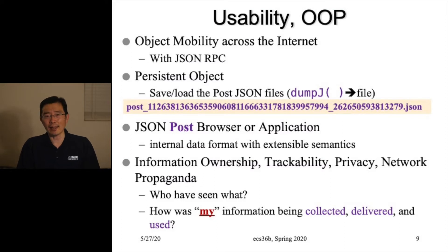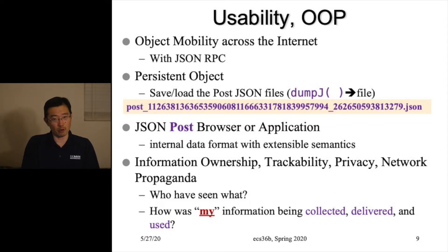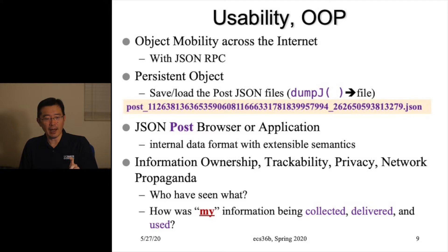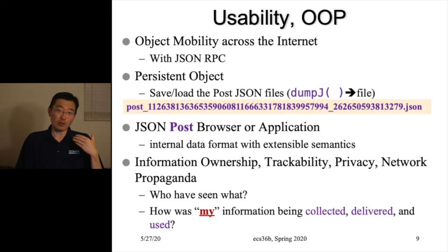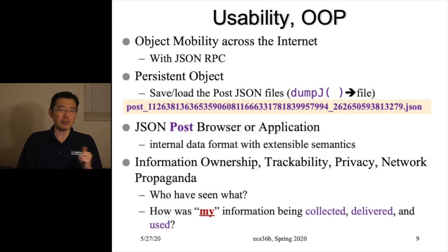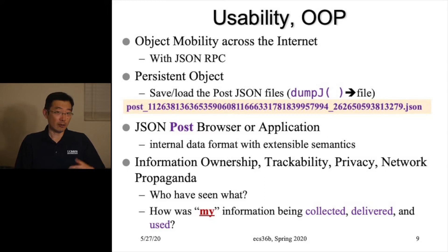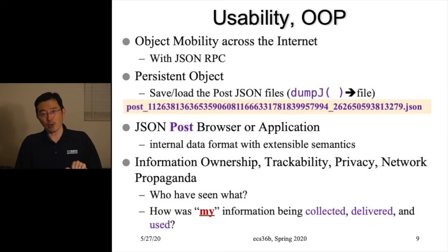One question you might ask is: when you have this one-to-one mapping and can translate between JSON and C++, what's the big deal? Number one, that capability provides what we call object mobility. Object mobility means I can move an object from one point on the internet to another. If I want to move a post object from Davis, California to New York, I translate the local post object into a post JSON and send it to a server in New York.